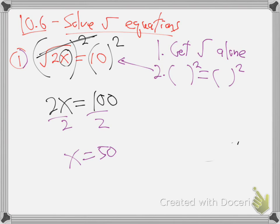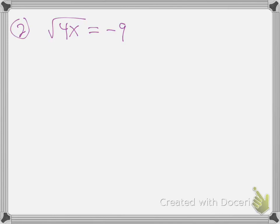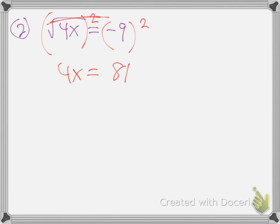These are going to get pretty challenging, so please ask questions — it helps everybody. So what do we do to get rid of that root? Square it — two-power it. Put parentheses on the left side, two-power, parentheses on the right side, two-power. Both sides: on one side they just cancel out — the root and the square cancel. The other side: negative nine times negative nine is positive 81. One more step: divide by four. x is 81 fourths.